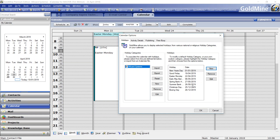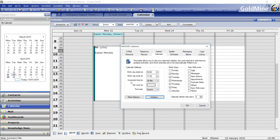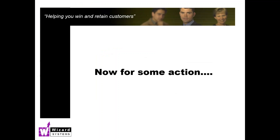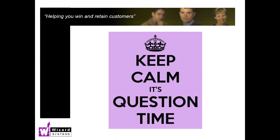So there we are — public holidays displayed in your Goldmine calendar. Rather than highlighting in a user's calendar, which you might do for personal holidays, public holidays are done like this. If you've got any questions around this function or any Goldmine questions at all, please pop those into the meeting control panel and I'll do my best to answer those.